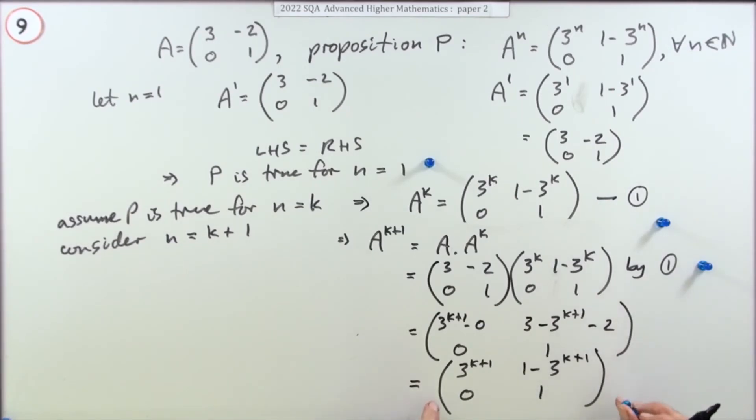Now the next mark isn't necessarily for getting to the final answer. It seems to be just by merely multiplying these matrices together. I would have assumed it would have been there because you've still got the big statement to make at the end.